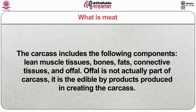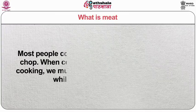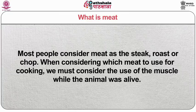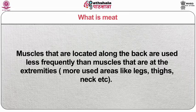Offal is not actually part of the carcass. It is the edible by-products produced in creating the carcass. Most people consider meat as the steak, roast or chop. When considering which meat to use for cooking, we must consider the use of the muscle while the animal was alive. Muscle sections that are used more frequently will be tougher than more sedentary muscle groups. Muscles located along the back are used less frequently than muscles at the extremities — more used areas like legs, thighs, necks etc.